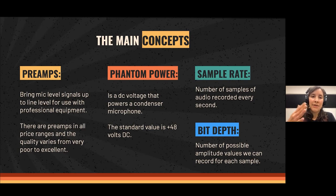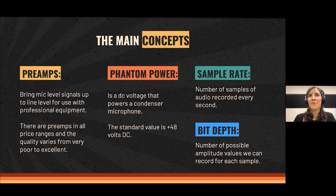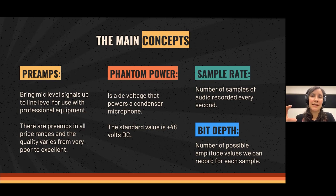There are many different price ranges for preamps, and the quality also varies — from 30 euros to 600 euros difference. Almost every audio interface or mixer already has preamps built in. But in the best professional music recording studios, they have external preamps dedicated solely to this job inside the studio, and their quality is really defining for the overall quality of the sound.